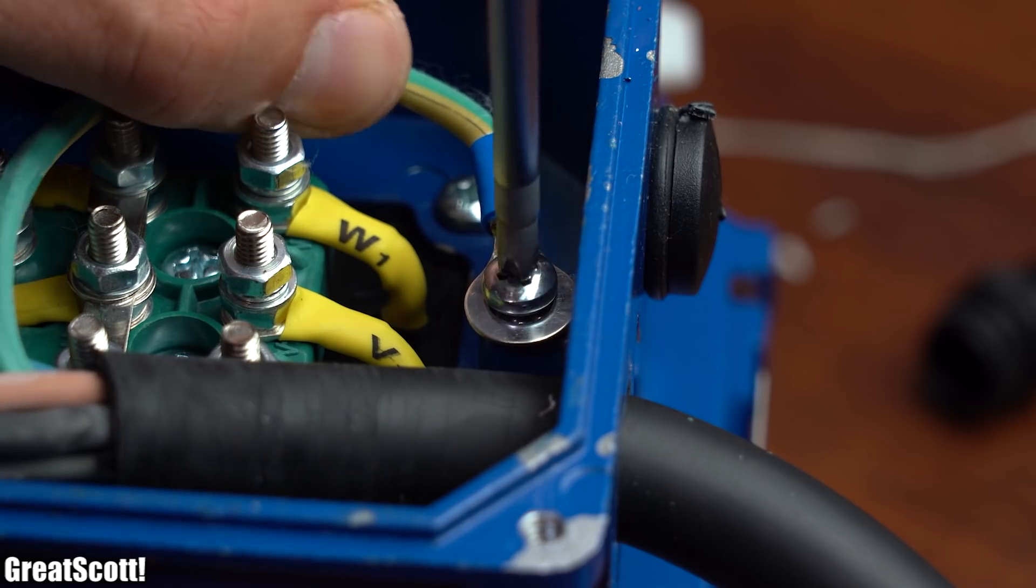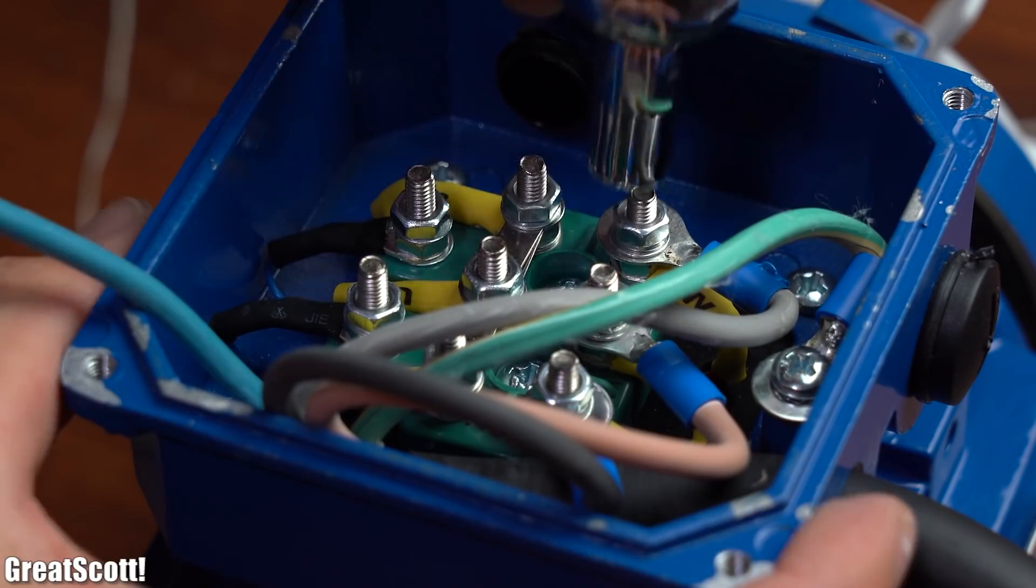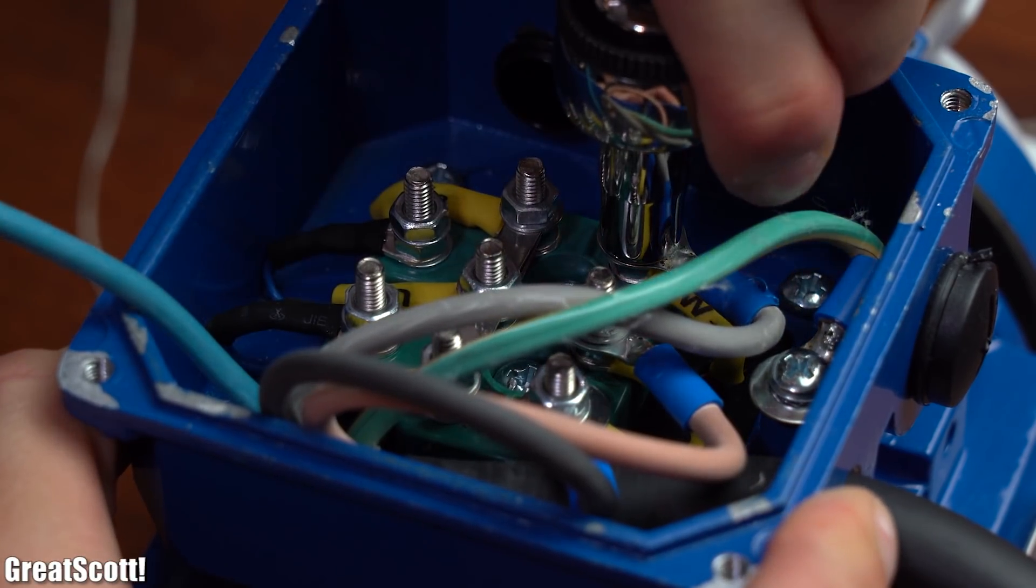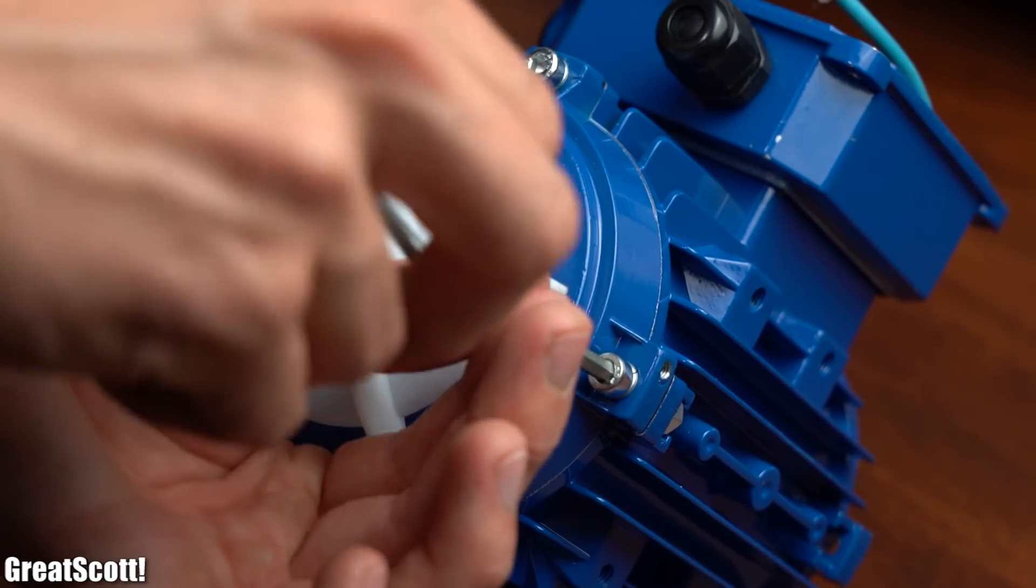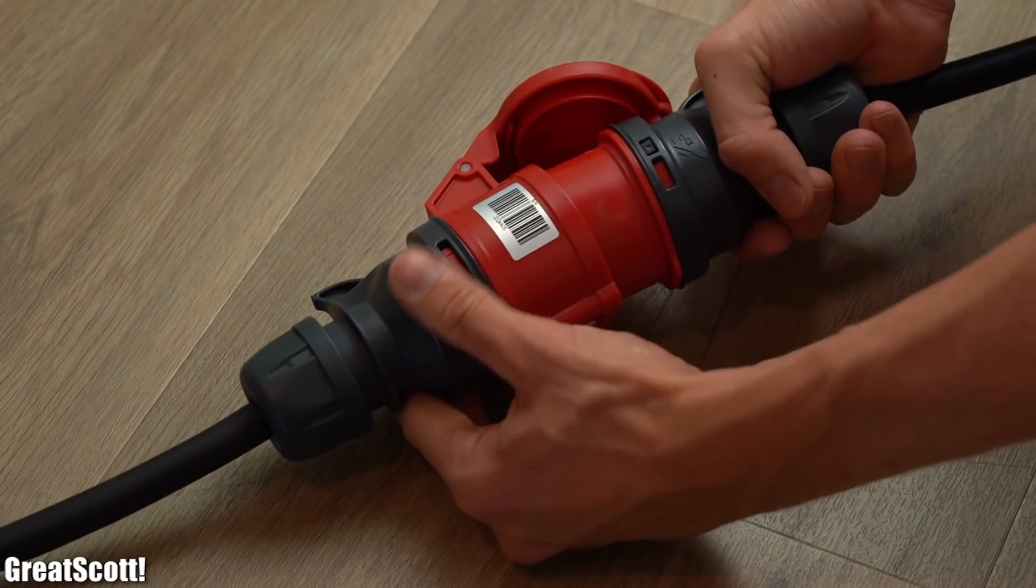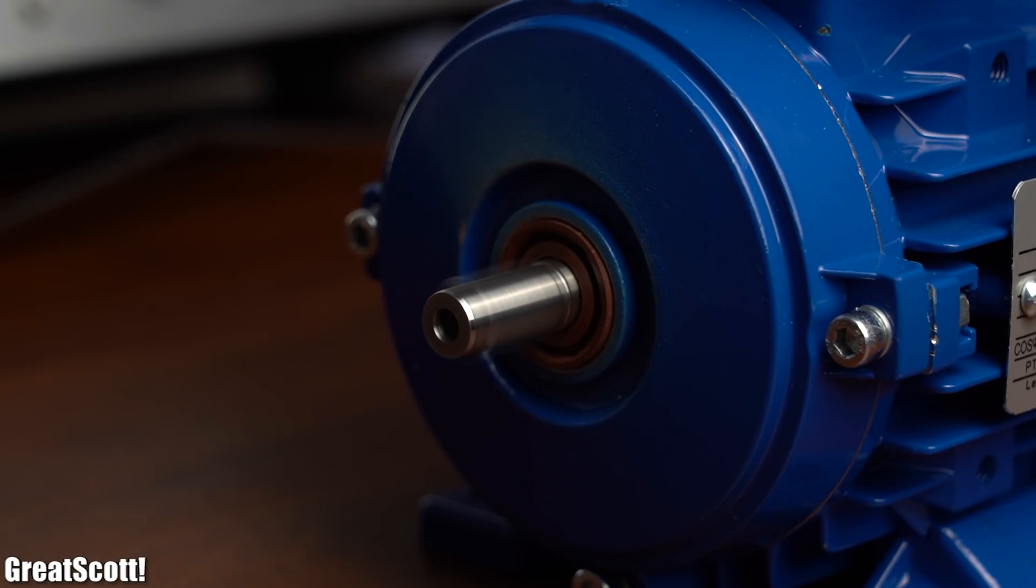Luckily the star configuration was still in place and thus I hooked up PE, L1, L2 and L3. But before powering anything I reassembled the motor and only then supplied it with voltage to find out that it spins just fine.